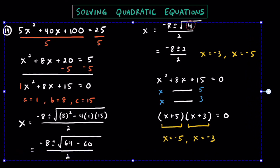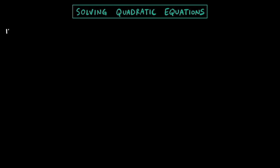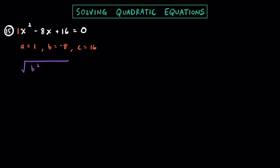Now that we've done a bunch of practice problems, let's practice using the discriminant to determine what types of solutions we have, without fully solving the equation. For this first one, x squared minus 8x plus 16 equals 0. The discriminant is b squared minus 4ac — that's the most important part of the quadratic formula. We have a equals 1, b equals negative 8, c equals positive 16.